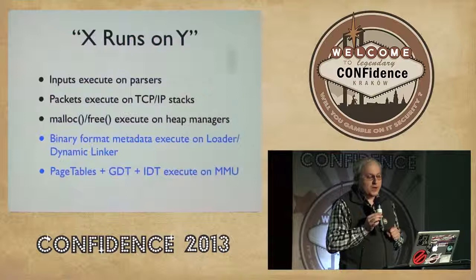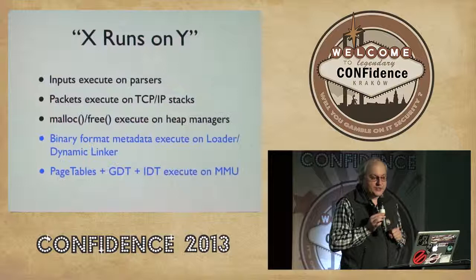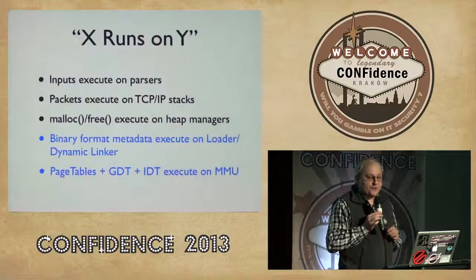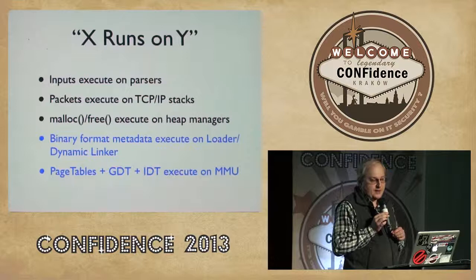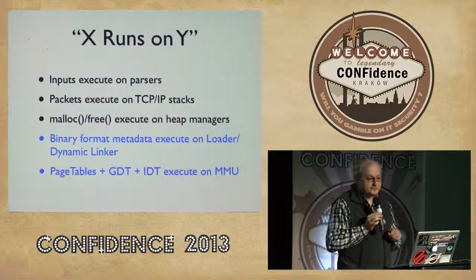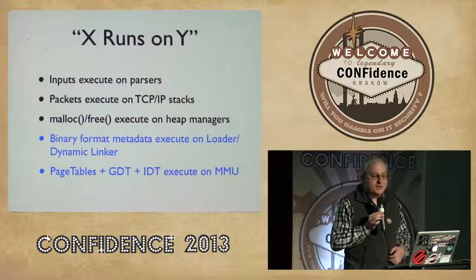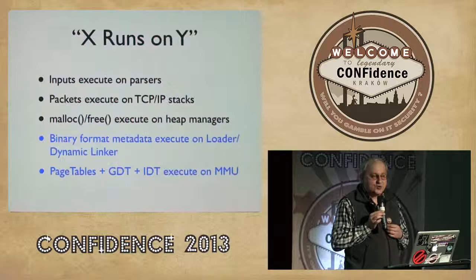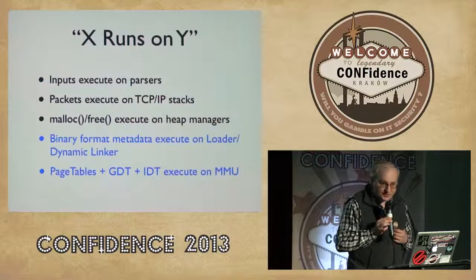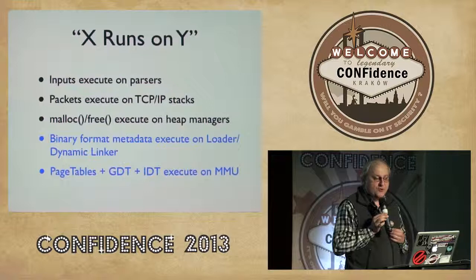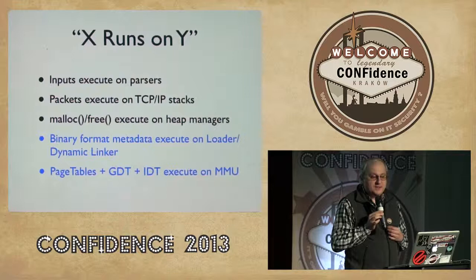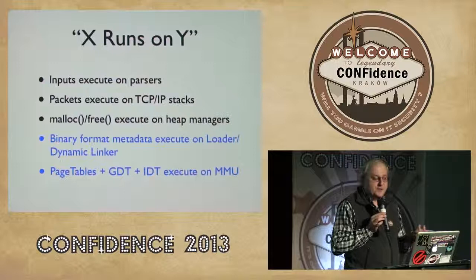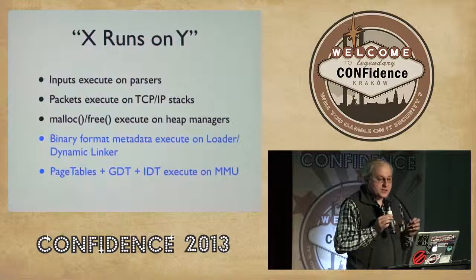Today we're going to show you two weirder examples. The first is that the metadata of your executable file executes on the dynamic linker loader, RTLD, and in fact it can be as powerful as a Turing machine — that is to say, your main processor. The second, which is even weirder and deeper down the stack, is that if you control the page tables, the global descriptor table, and the interrupt descriptor table on x86, you can actually drive a Turing complete computation without dispatching any instructions. All that silicon that goes into processing an instruction is actually immaterial to this model.